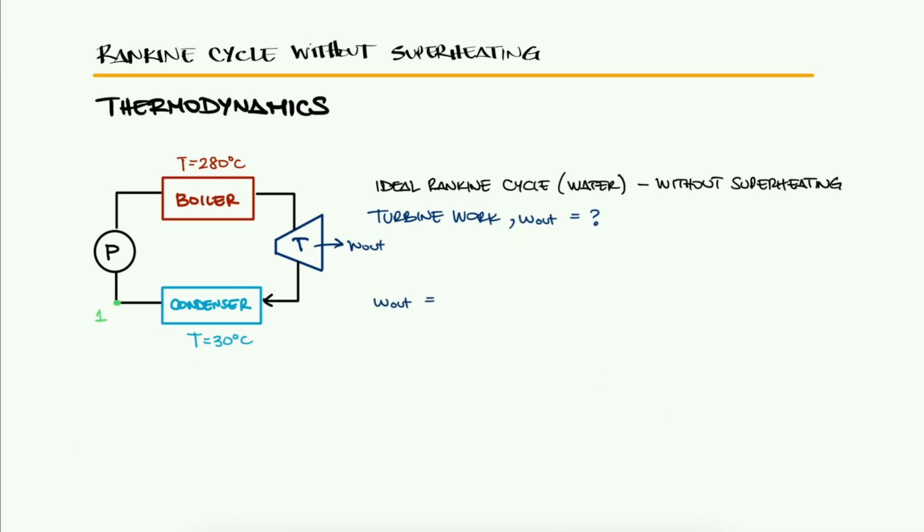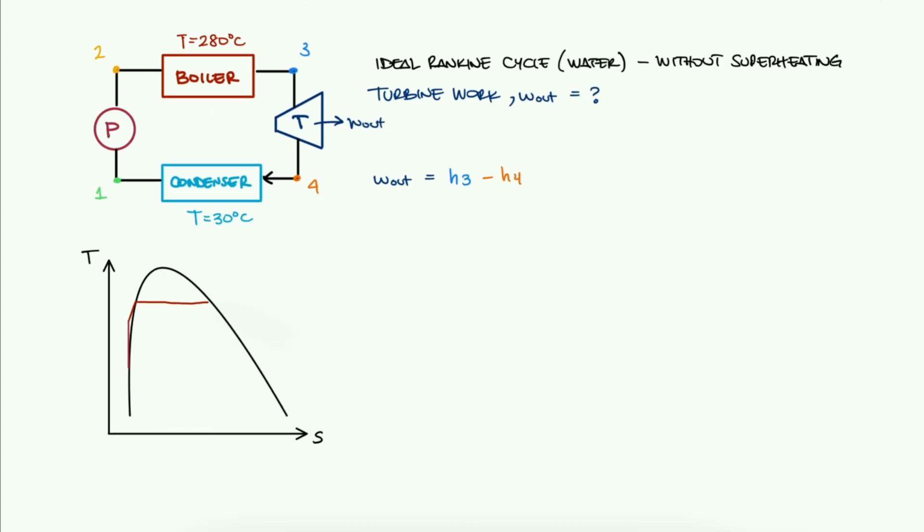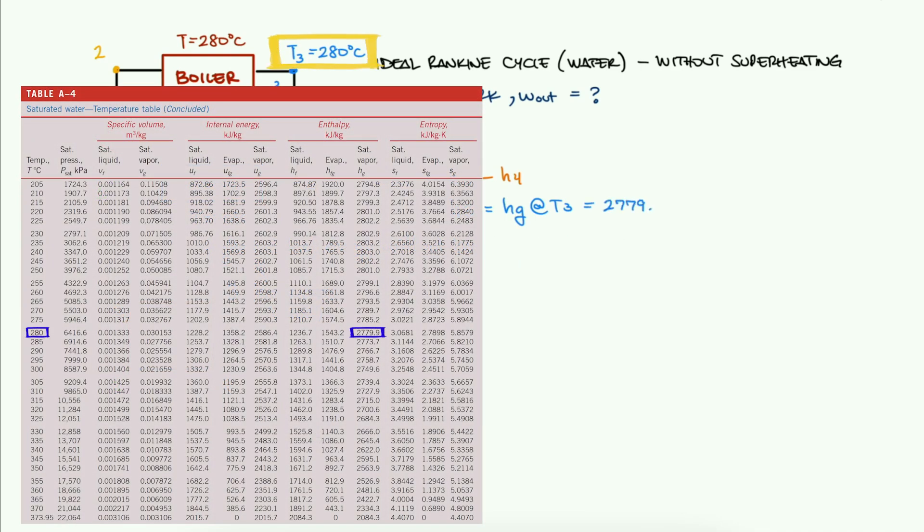The work that the turbine produces is H3 minus H4. We know that if there is no superheating, state 3 is a saturated vapor for the cycle to be most efficient. And this in turn means that H3 is Hg at the temperature of the boiler. This we can find using our tables.